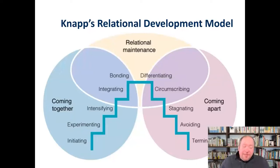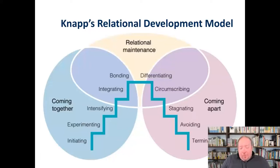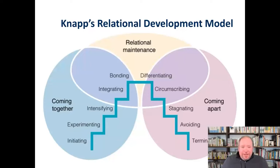But if it's going well, you move on to the intensifying stage — spending a little more time together on a one-on-one basis. It can go through all these different stages. You can see there are three general areas: the coming together, the relational maintenance, and the coming apart. None of these is automatic or a foregone conclusion.